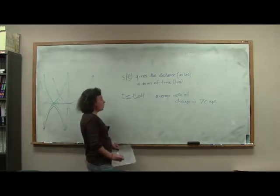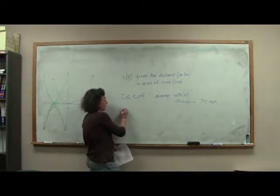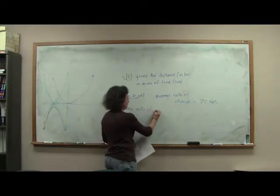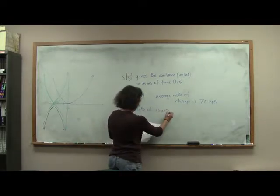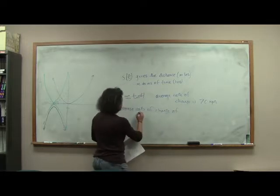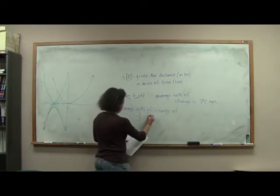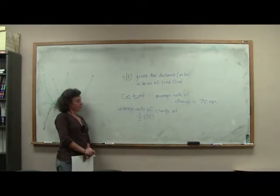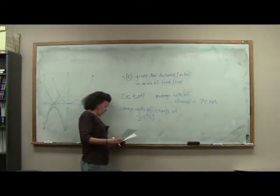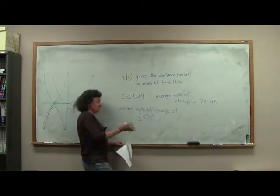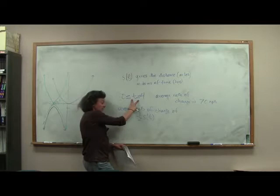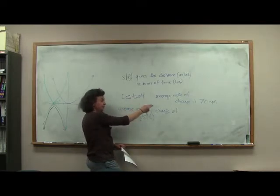So if the average rate of change of s of t between t and 4, suppose we have the average rate of change is, say, 70 miles per hour. What we want to know is, what's the average rate of change of one half of s of t? Well, don't let this make you feel uncomfortable.